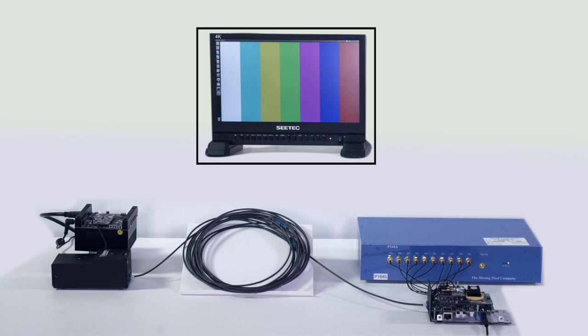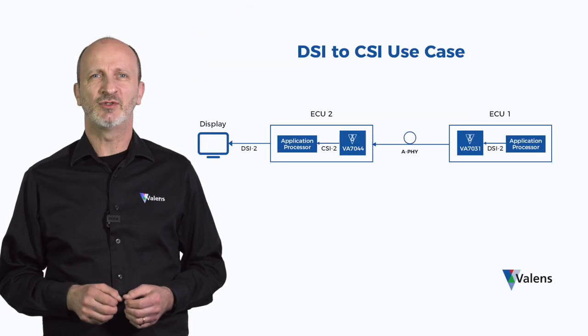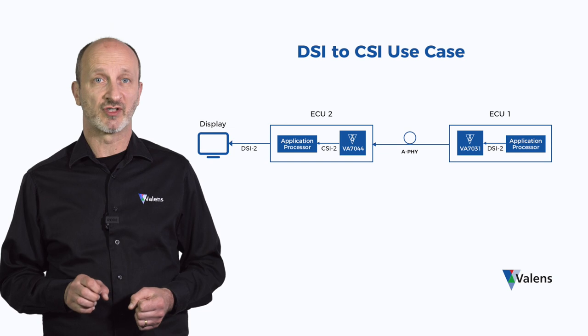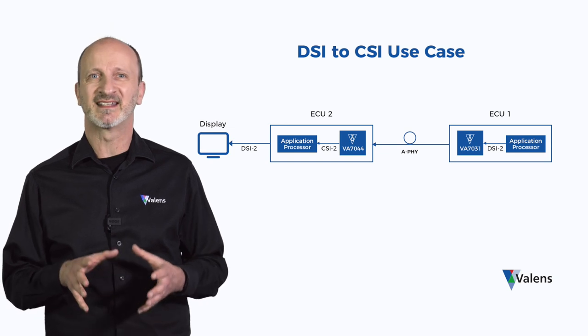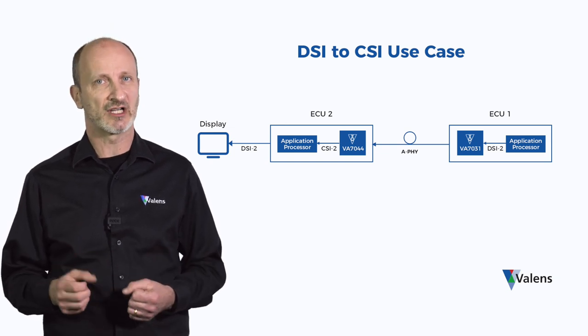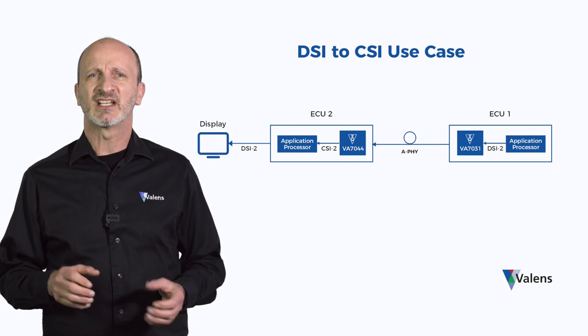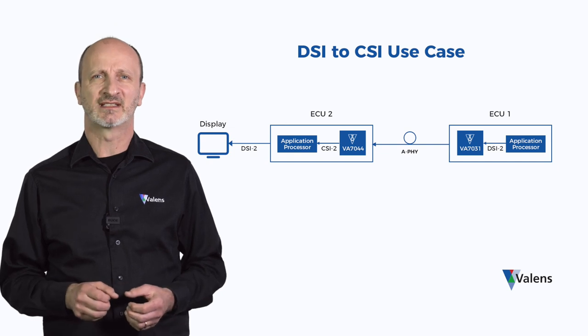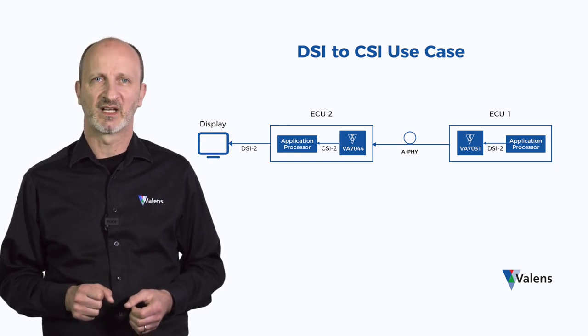The VA7031 can also support the YUV420 format. A good example of where this would be implemented is an ECU that receives multiple video streams, processes the data, and then forwards it to other ECUs that rely on it, such as a head unit display or an ADAS system.